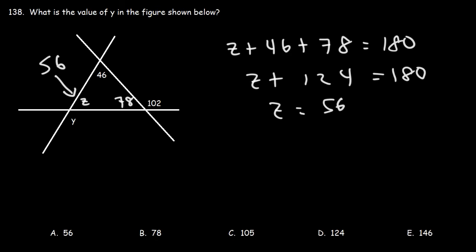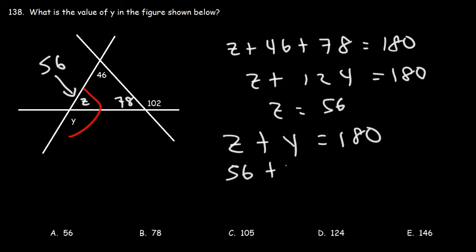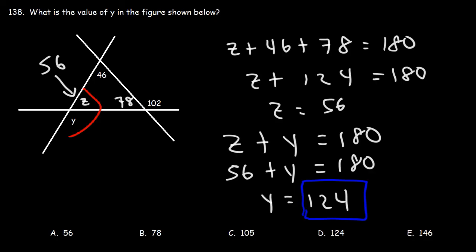Notice that Z and Y also form a linear pair, so Z plus Y equals 180. Substituting: 56 plus Y equals 180, so Y equals 180 minus 56, which is 124. Answer choice D is the correct answer.